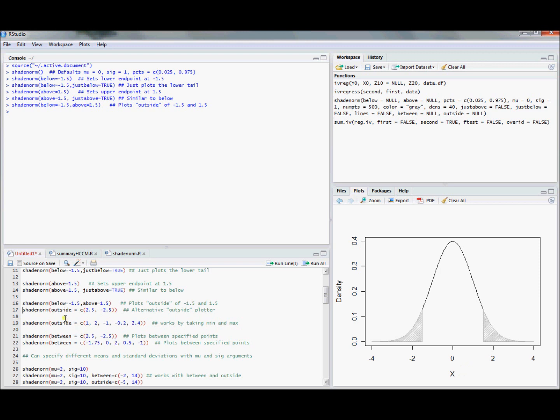I've also implemented an option called outside. If you give it a vector, it's going to plot outside of that range of that vector. So the simplest thing is you could say outside 2.5 and negative 2.5, just give it the endpoints, and it's going to give you outside negative 2.5 and 2.5. If I had said negative 1.5 and 1.5 in here, it would give you the same plot, but I wanted to show you the plot window changing.